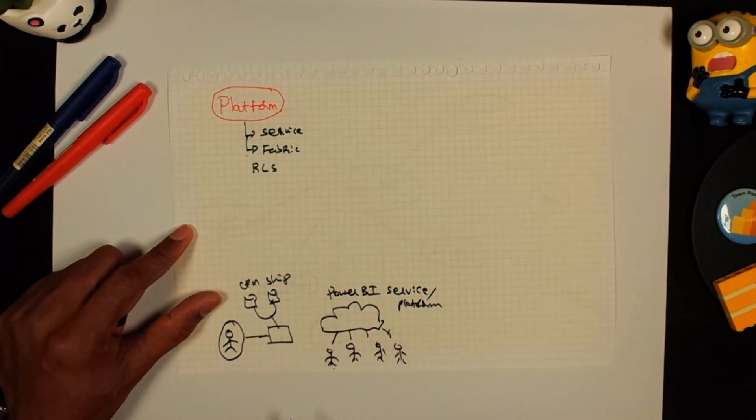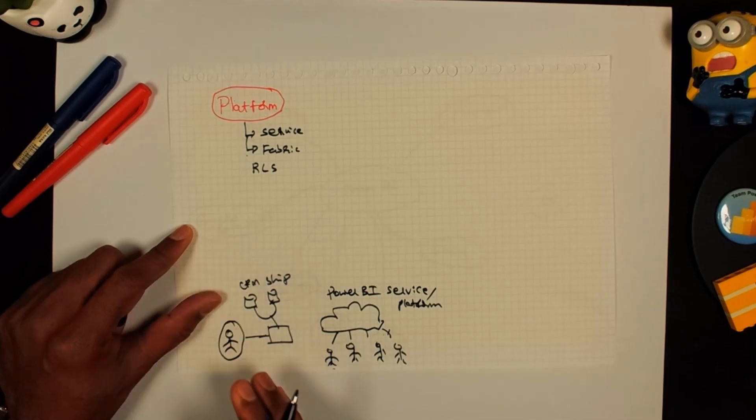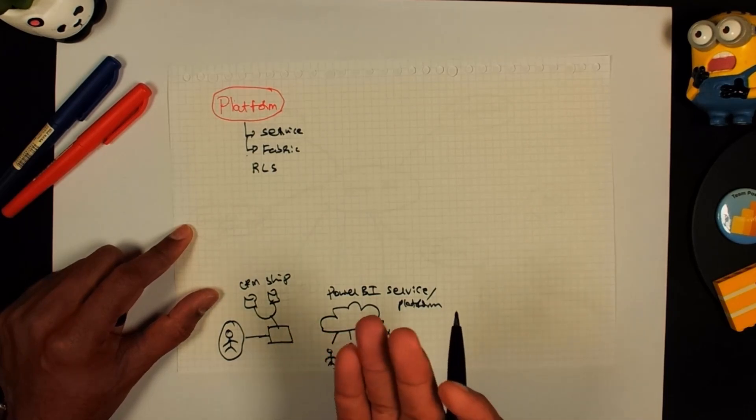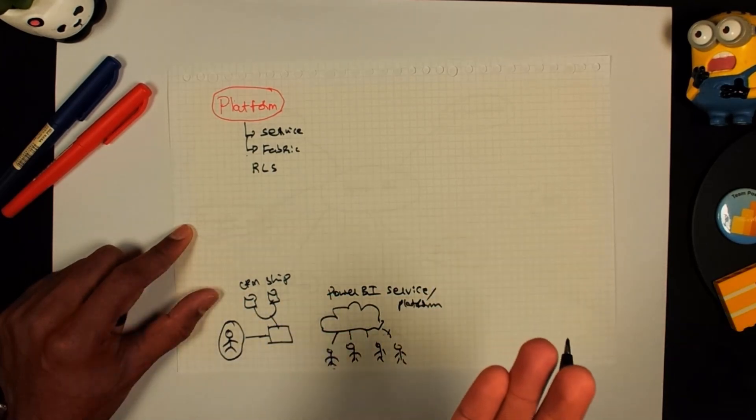So that is where row level security comes in. You can set up a security protocol and rules that say that this person can only see this kind of data. This person can only see this kind of data. Then what happens is same report will appear differently for each of them. If you think carefully, what RLS or row level security is doing is, behind scenes, it is adding another layer of filtering or slicing.